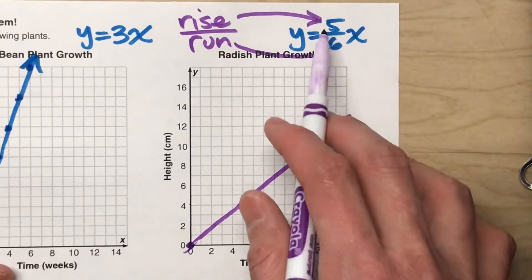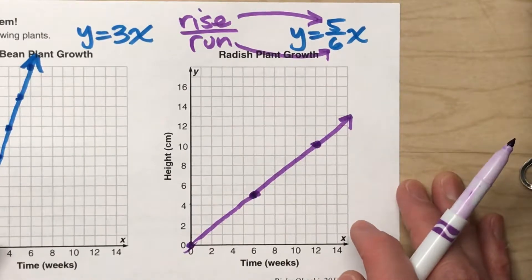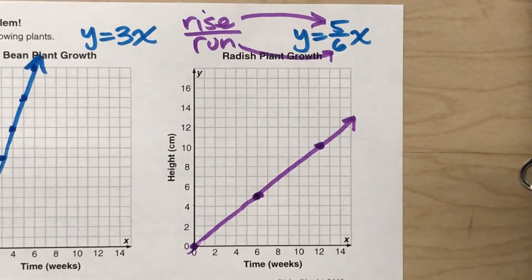All right, so that's called the rise over the run. And that makes graphing equations with slopes that have fractions a lot easier.